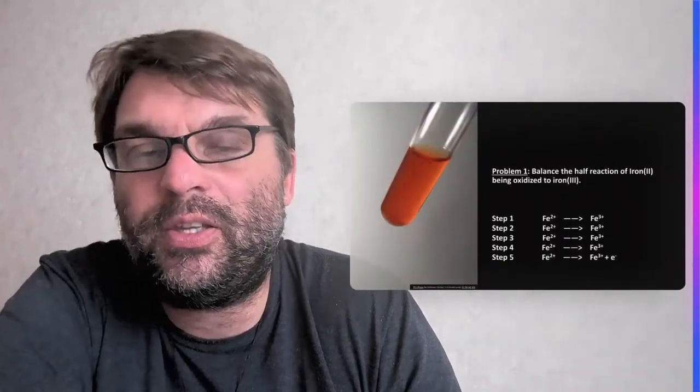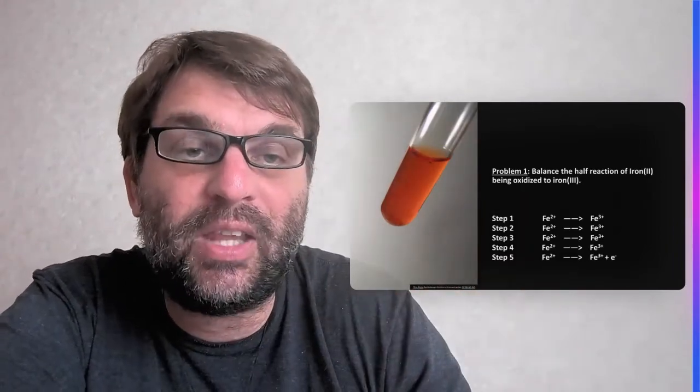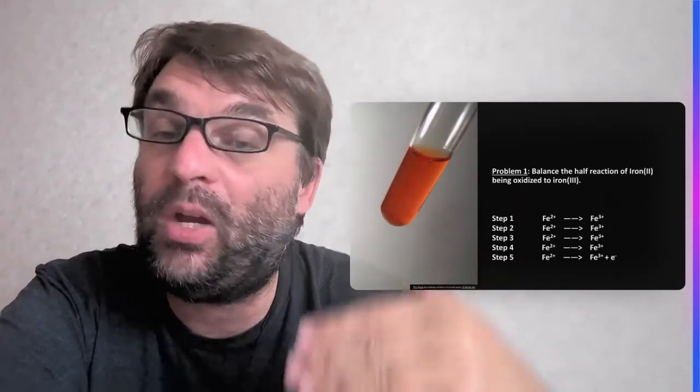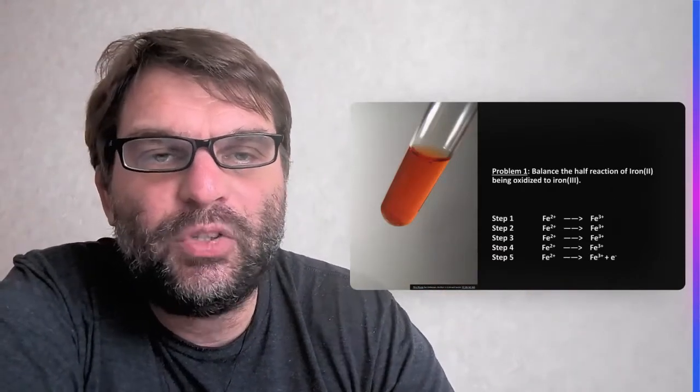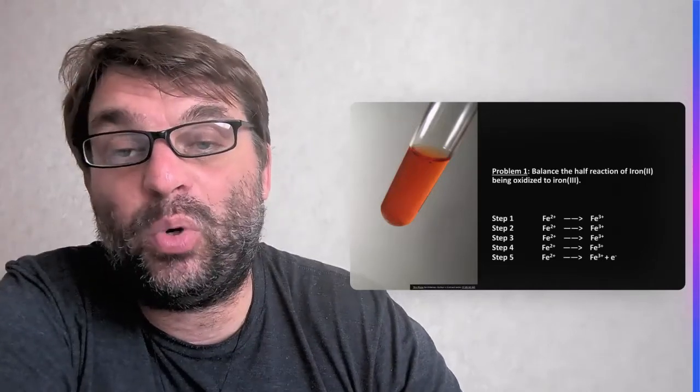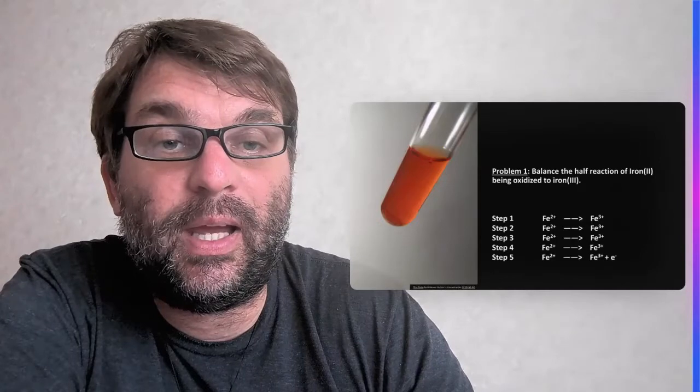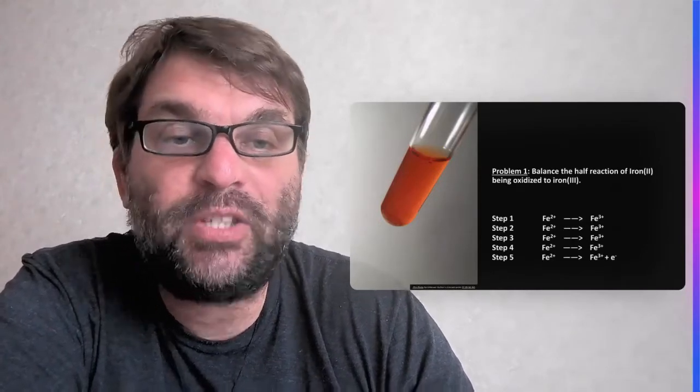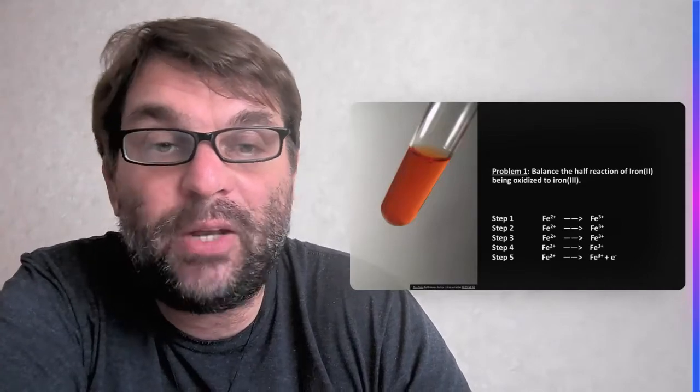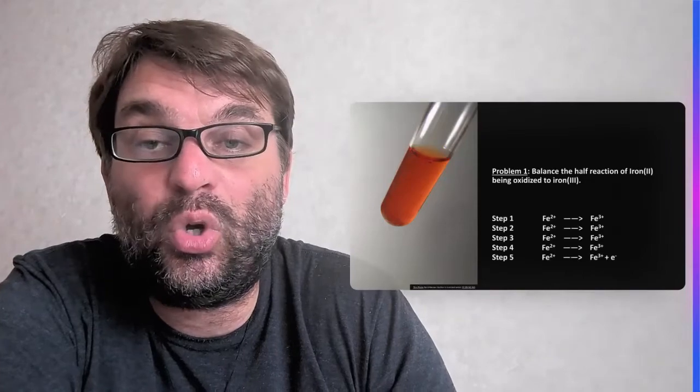So the first one, which highlights the idea that you don't have to sometimes use all of the steps, balancing the half reaction of iron 2 being oxidized, that nice brown color we see in the test tube of iron 3 plus. The first step is what's the species that are involved? Well, the iron 2 plus is essentially being oxidized to iron 3 plus. So that's the first thing. Next thing you have to do is we have to balance the atoms. You have one iron atom on one side, one iron atom on the other, so that's all good.